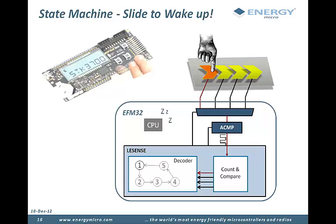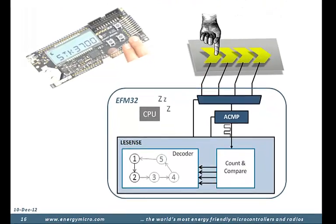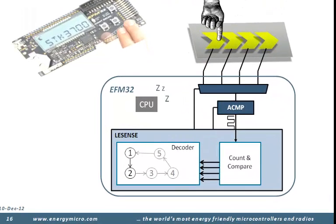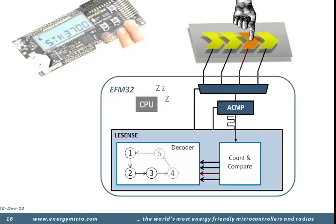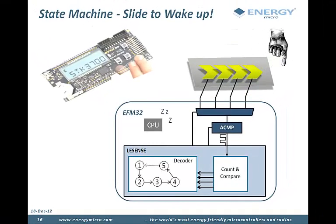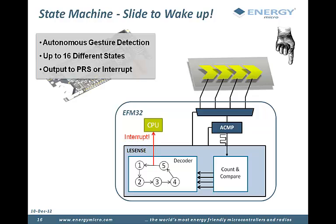When a finger approaches and passes the pads, the state machine keeps track of the order the pads are activated in. The state machine can issue an interrupt when the finger has passed all the pads in the configured order.